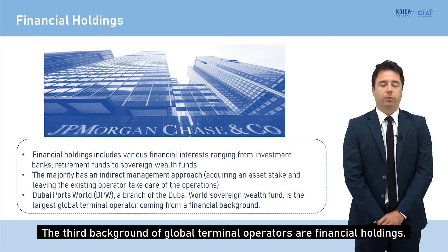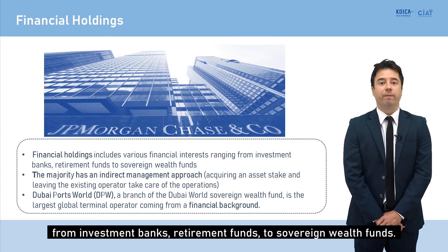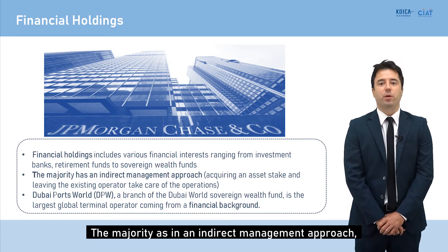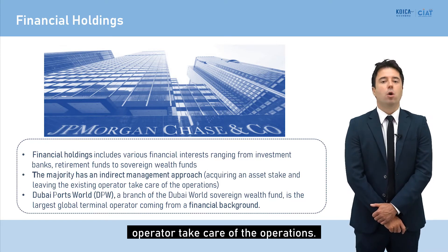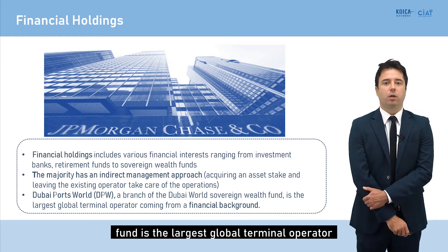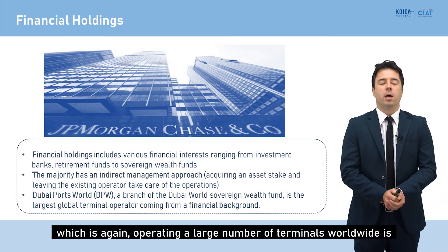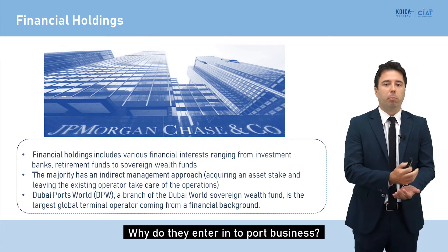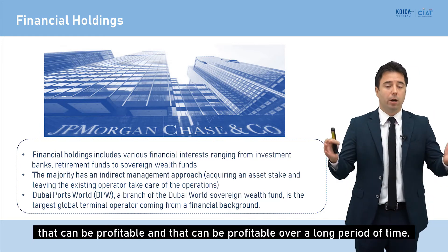The third background of global terminal operators is financial holdings, including investment banks, retirement funds, and sovereign wealth funds. The majority take an indirect management approach — acquiring an asset stake and leaving existing operators to manage operations. Dubai Ports World, DP World, is a branch of the Dubai World Sovereign Wealth Fund and is the largest global terminal operator from a financial background. DP World operates a large number of terminals worldwide, entering the port business because it's seen as a profitable long-term business.